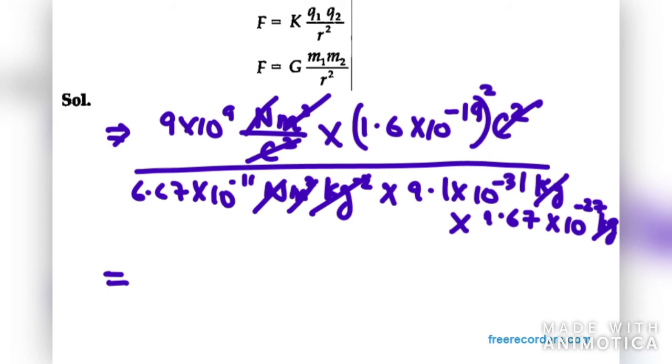So when we solve this we get the value of 2 into 27, that will be 54. 54 into 10 raised to power 39. And remember it doesn't have any units.